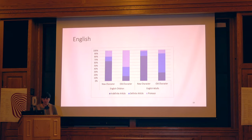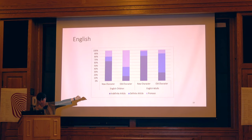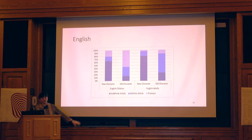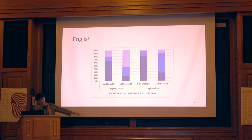In English, we were looking at the use of the indefinite article, the definite article, and pronouns. We can see that both the kids — five-year-olds — and the adults — university students — rely more on indefinite articles to introduce new characters and use the definite article more for old characters. Although there's a difference: adults tend to use more definite articles for old characters, whereas kids rely more on pronouns.